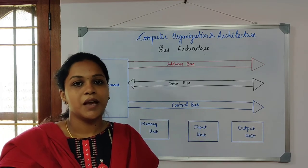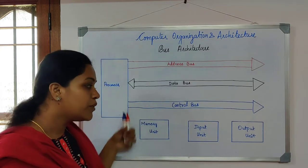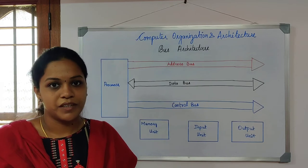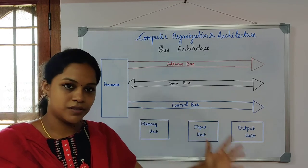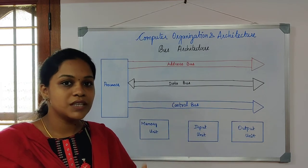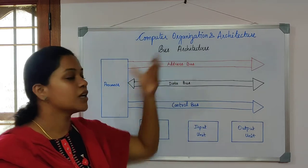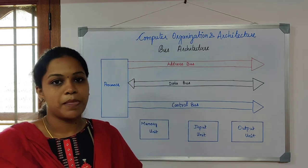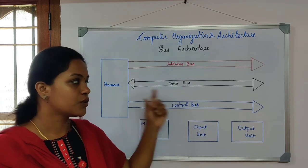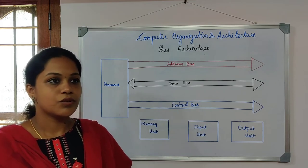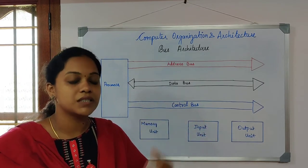What is a bus? Bus is a group of wires that helps the components communicate with one another. There are various components in a computer system, and how these components communicate with each other is through this communication link called bus. Bus is nothing but a group of wires connected together, and these main components are connected through the system bus.